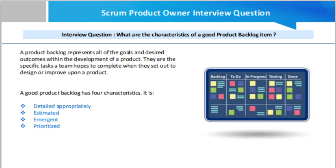This process takes time, but there are simple, powerful strategies for maintaining a good quality backlog. A good product backlog has four characteristics: it is Detailed Appropriately, Estimated, Emergent, and Prioritized. Now let's discuss each one in detail.